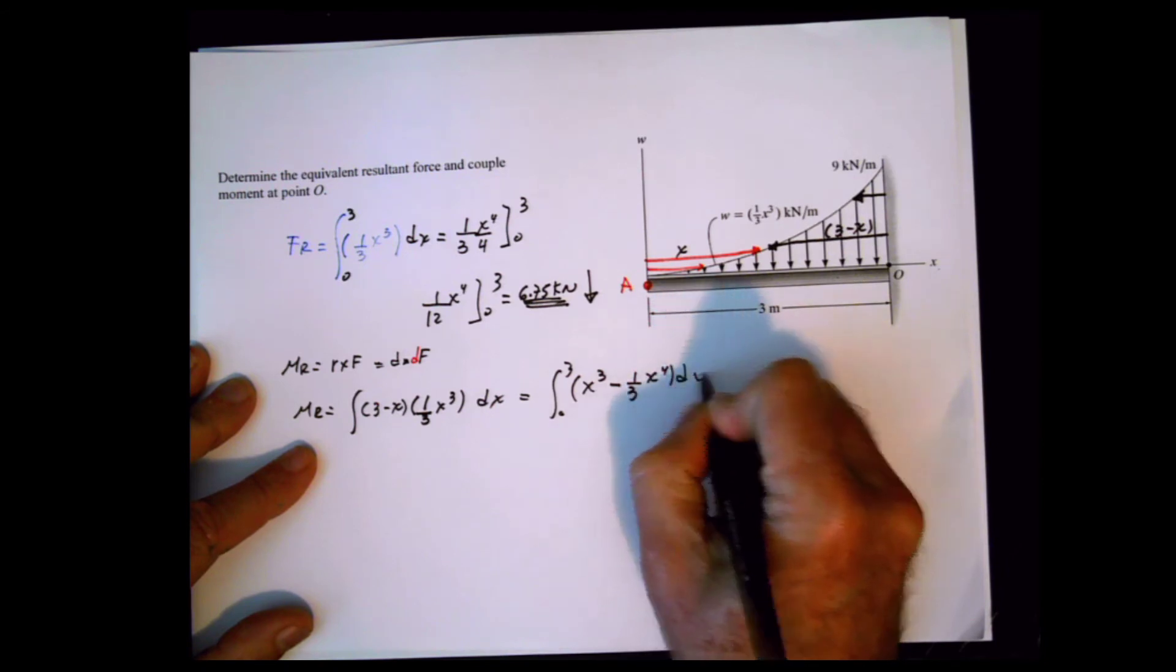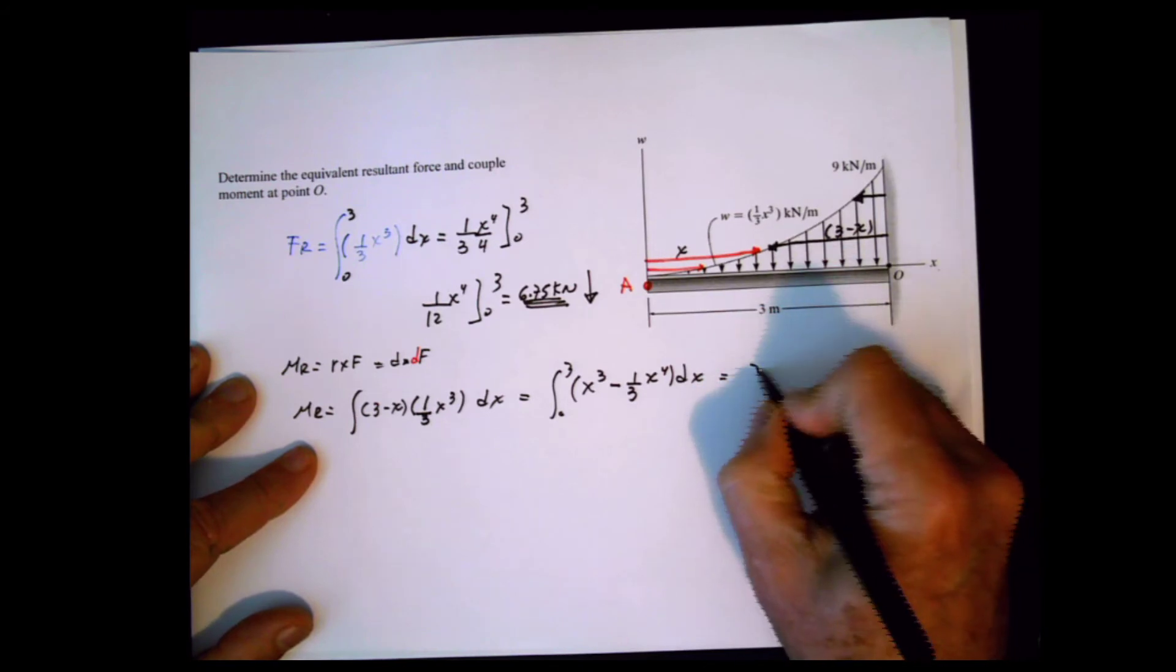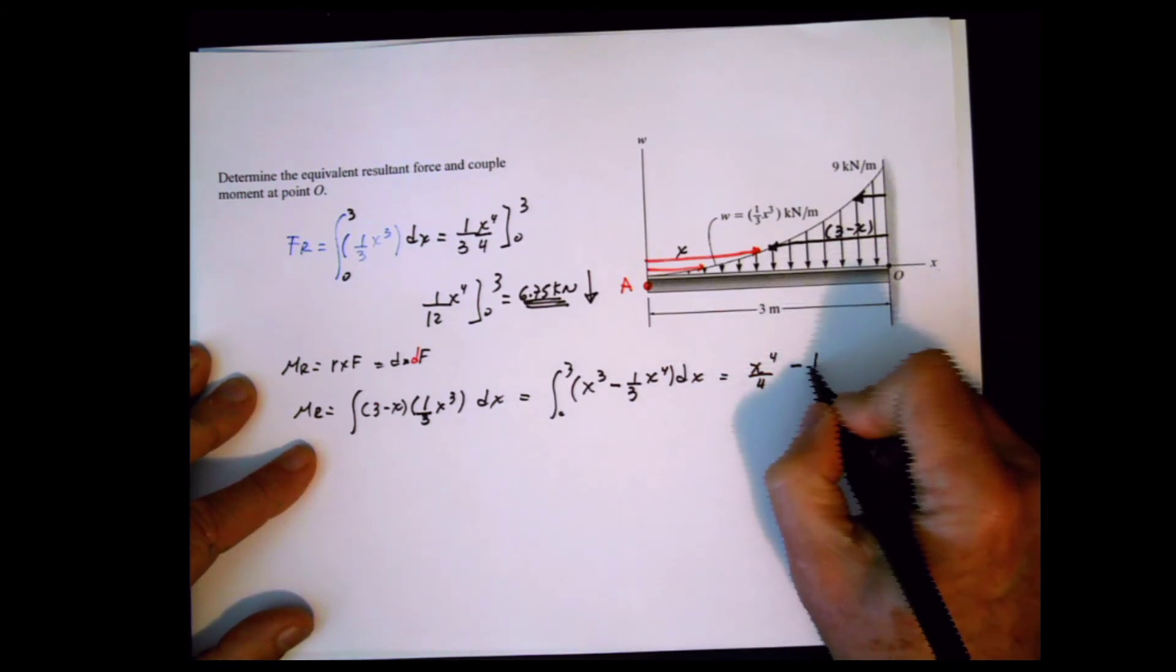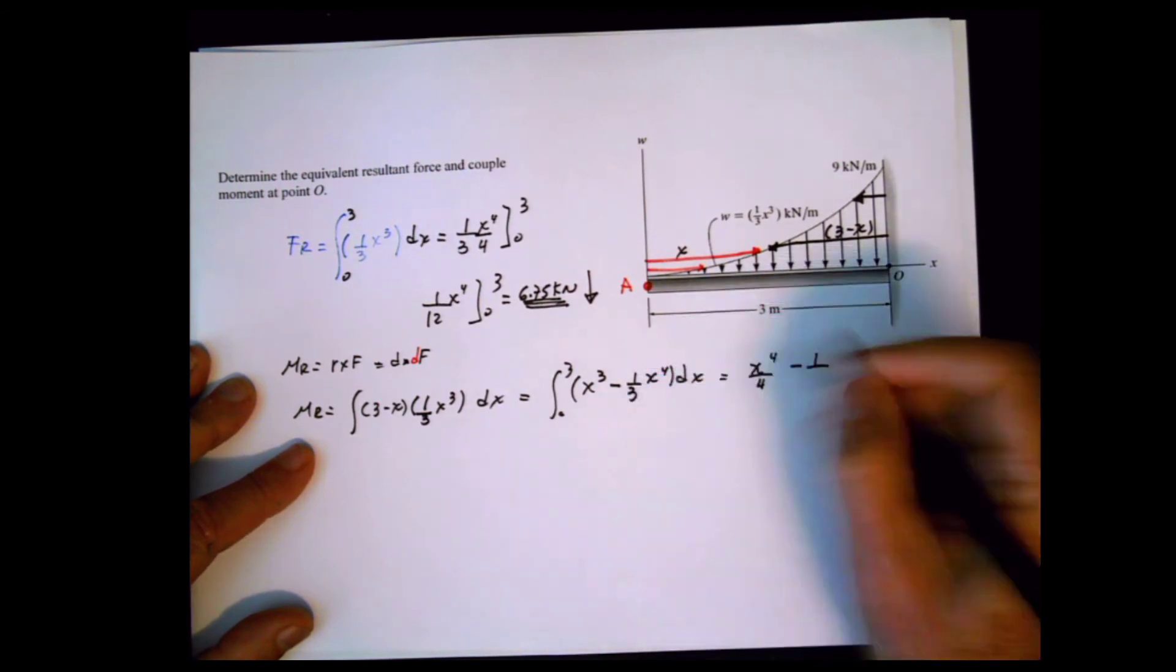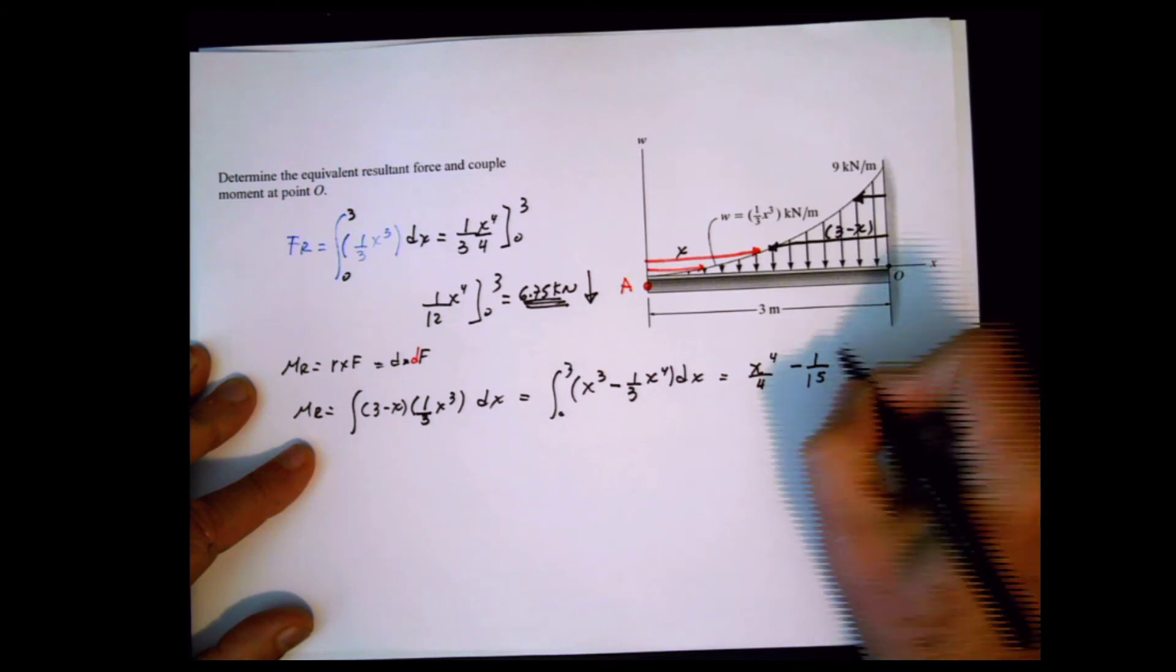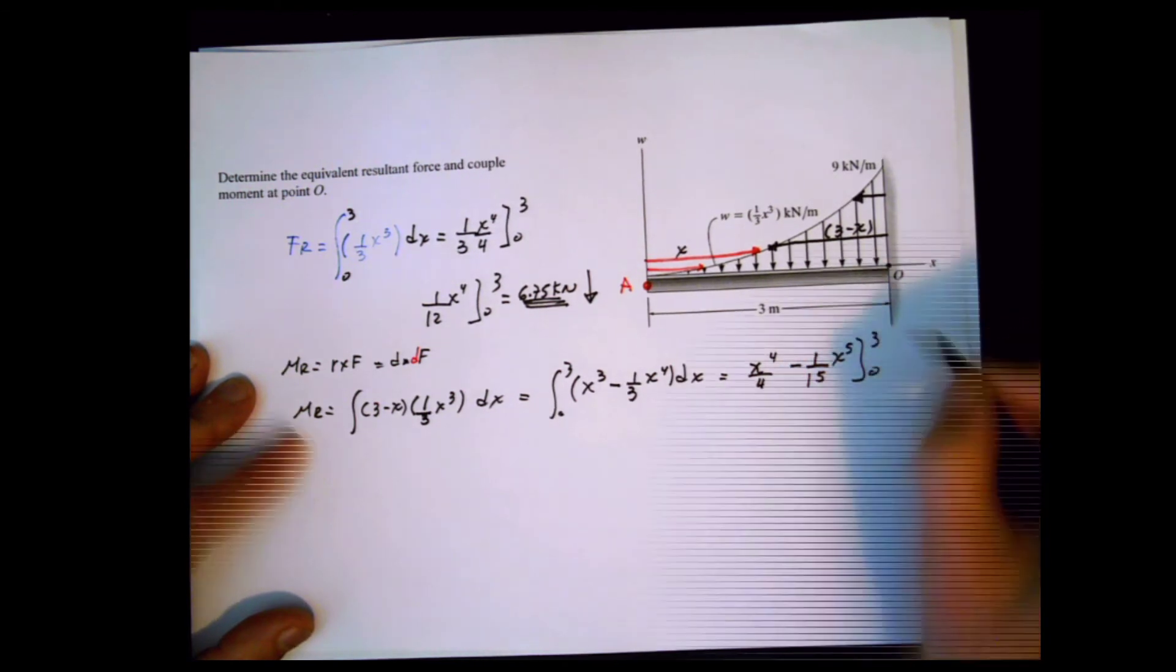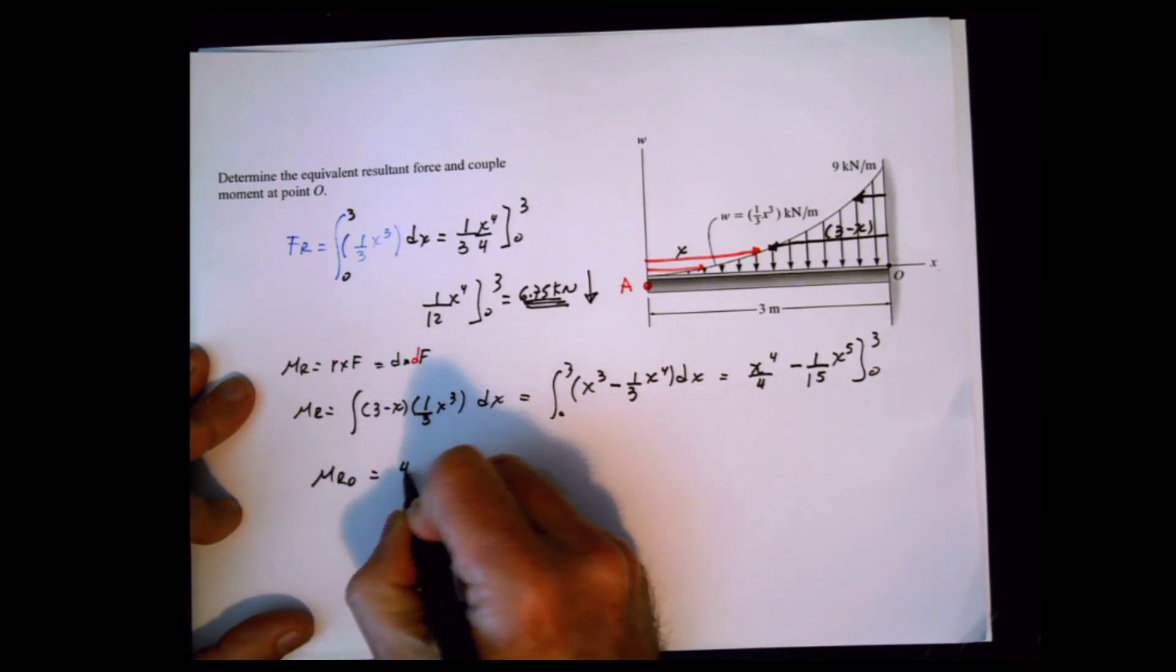Integrating gives x to the fourth divided by 4 minus x to the fifth over 15, evaluated from 0 to 3. The resultant moment with respect to O is 4.05 kilonewton meters.